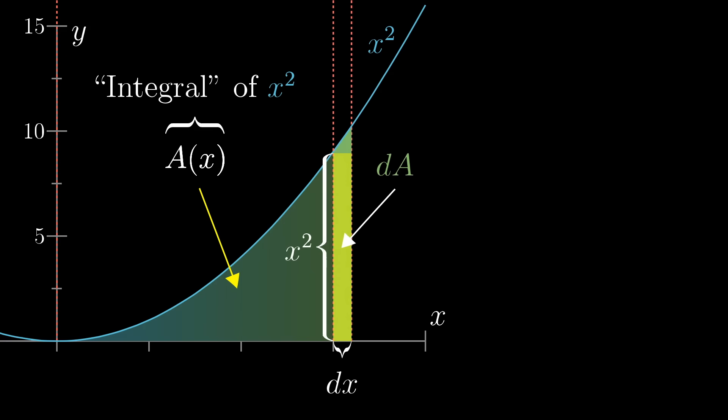Now this gives us an interesting way to think about how A is related to x squared. A change to the output of A, this little dA, is about equal to x squared, where x is whatever input you started at, times dx, the little nudge to the input that caused A to change.